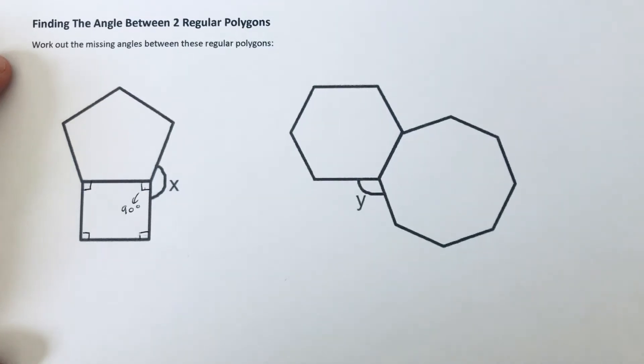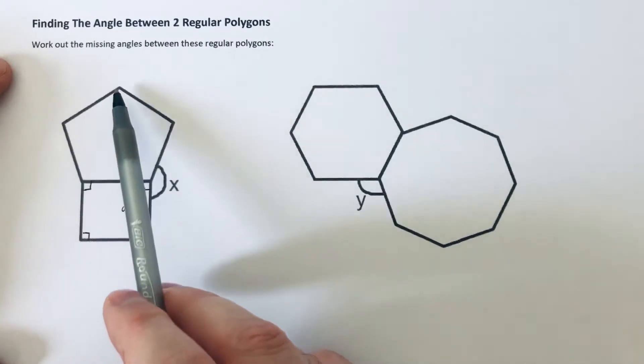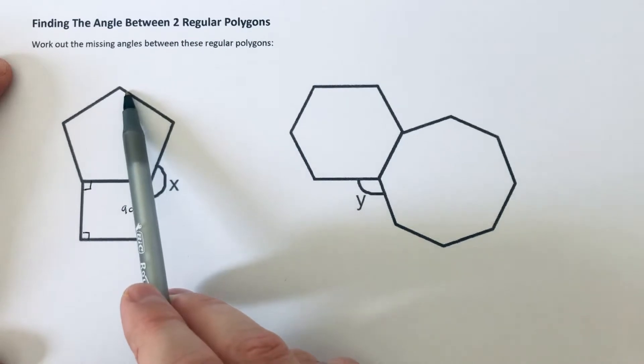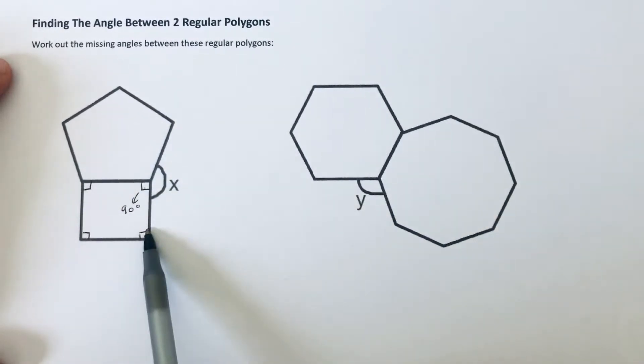Hi guys, welcome back. This is Maths 3000. Today I'm going to show you how to work out the angle between two regular polygons. So let's move on to the first example. We've got a regular pentagon with five sides and we've got a square, and we need to work out the angle between the pentagon and the square, so angle X here.